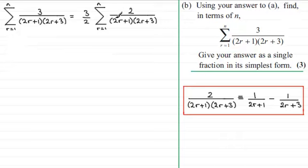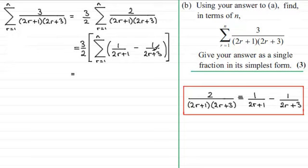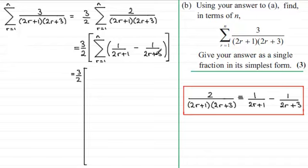Now I can split this into the two partial fractions. What we end up with is 3 over 2 times the sum from 1 to n of 1 over 2r plus 1 minus 1 over 2r plus 3. From here, we use a method called the difference method — named because we've got a negative between these two terms. So we've got 3 over 2 and then a big long bracket. We substitute r equals 1 into both terms first of all.